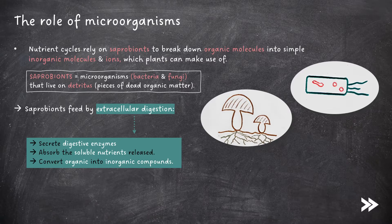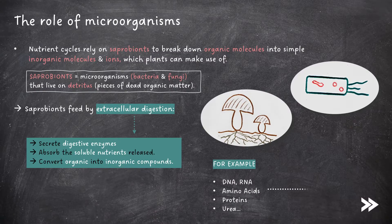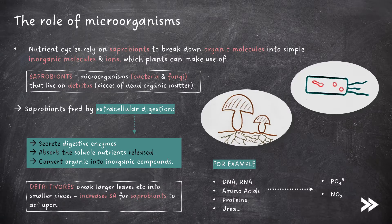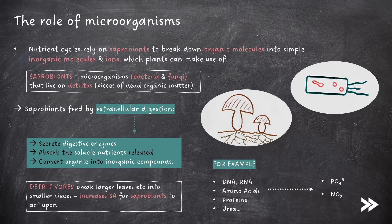For example, saprobionts may convert larger organic molecules like DNA, RNA, amino acids, proteins and urea, into smaller inorganic ions and molecules, like phosphates and nitrates. Note that detritivores are organisms which break larger pieces of detritus, like big leaves, into smaller pieces. This increases the surface area for saprobionts to act upon, increasing the rate of decomposition.